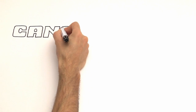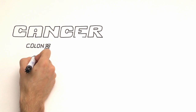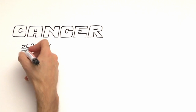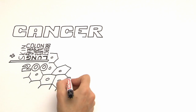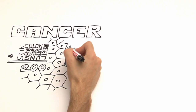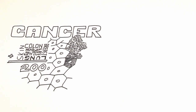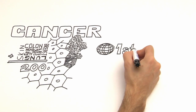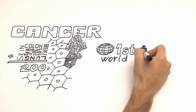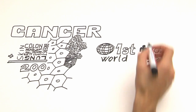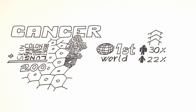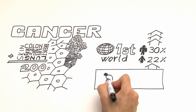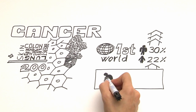What we usually call cancer is, in reality, a group of more than 200 different diseases that affect people. What these diseases have in common is that they involve an irregular growth of different cell types within the body. It is estimated that in developed countries the risk of cancer throughout life is 30% amongst men and 22% amongst women. This percentage is increasing due to the ageing of the population.